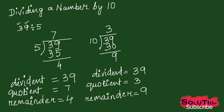If I take the number 39, you can see that if I remove the ones place digit — that is 9 — from here, then we will get the quotient 3 easily. So if I separate the 9, the number which is in the ones place, that will be my remainder.